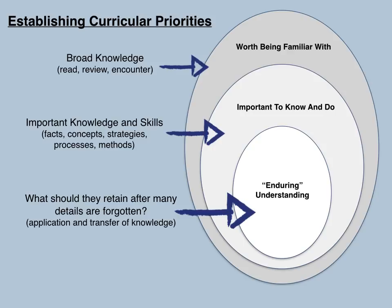As you can see from the illustration, the smaller circle represents the essential learning that we want to take place. This is where students will be able to transfer and apply knowledge. Please understand that each circle is important, but in order for learners to take away meaning from their learning, designers need to identify the enduring idea. In other words, what will the students remember years down the road?